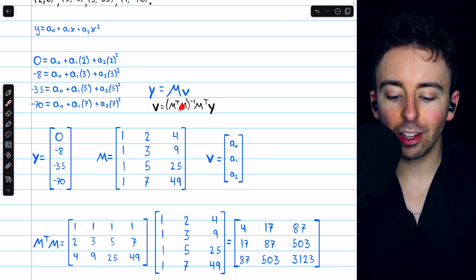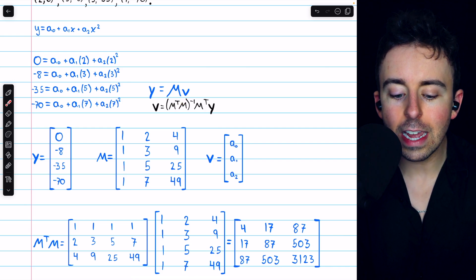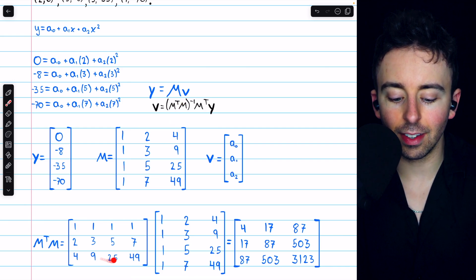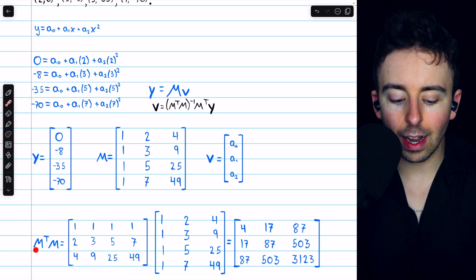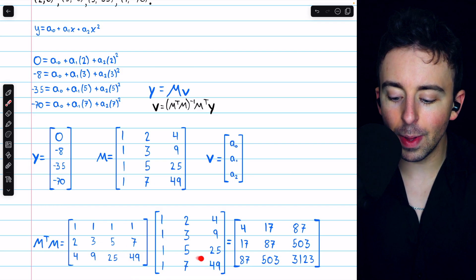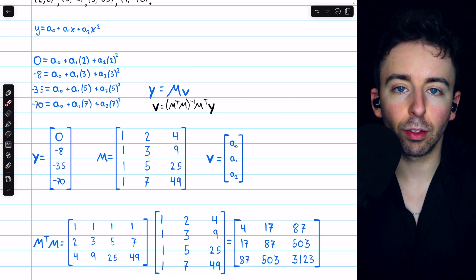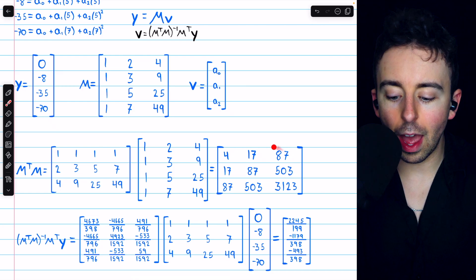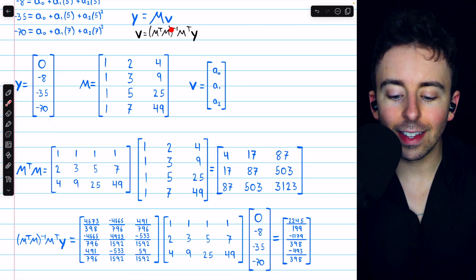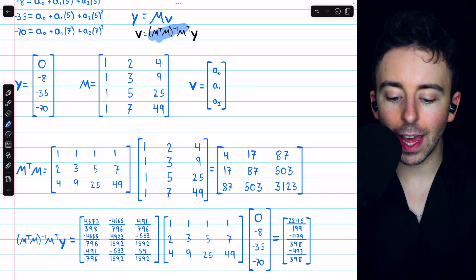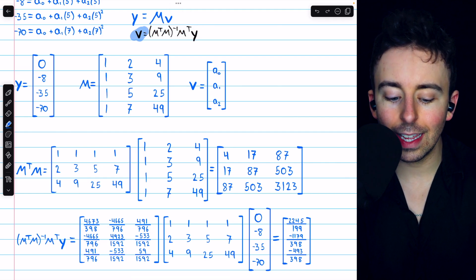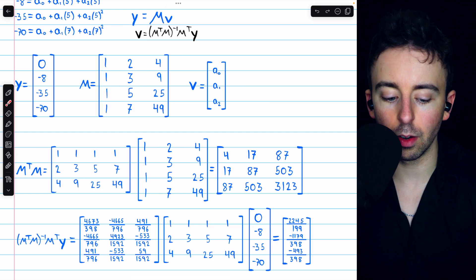Let's begin by finding m transpose times m. Here is m, so swapping rows and columns, we get that this is m transpose. So then m transpose times m is this 3 by 3 matrix. The computations here are quite tedious. Calculator is definitely preferred. Once we have m transpose times m, we can find its inverse, and then multiply that by m transpose, and then multiply that by y to get the least square solution, v.